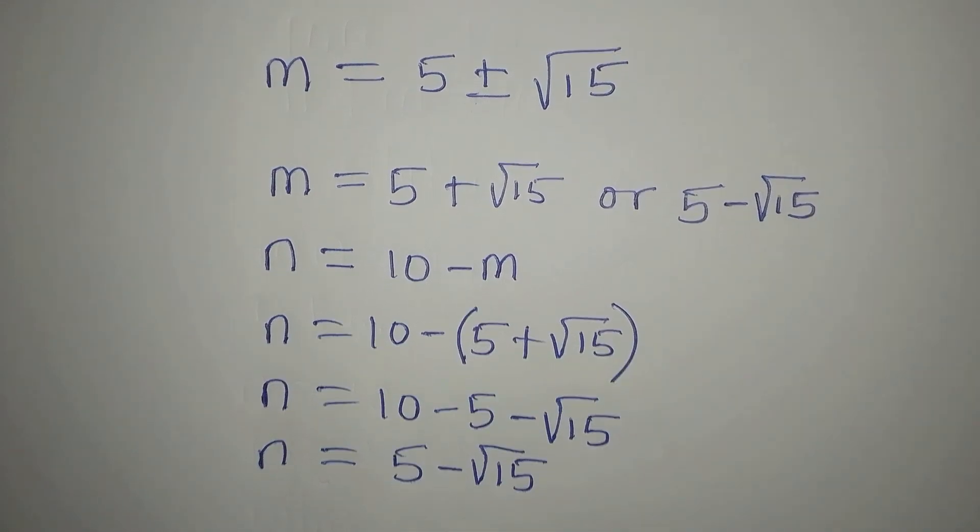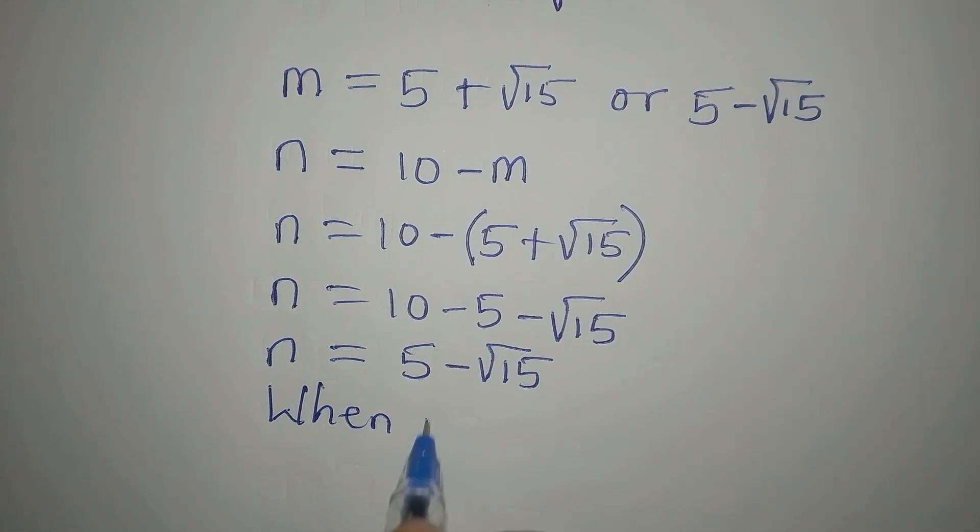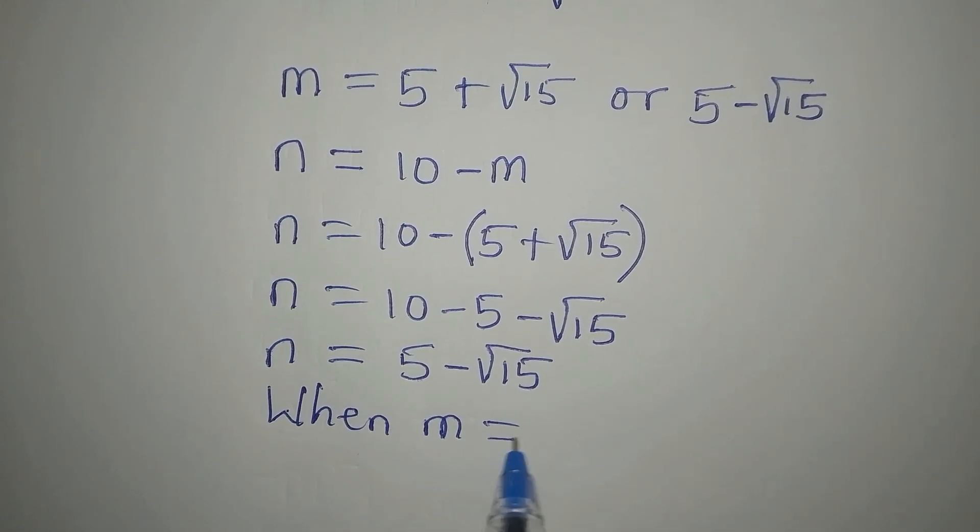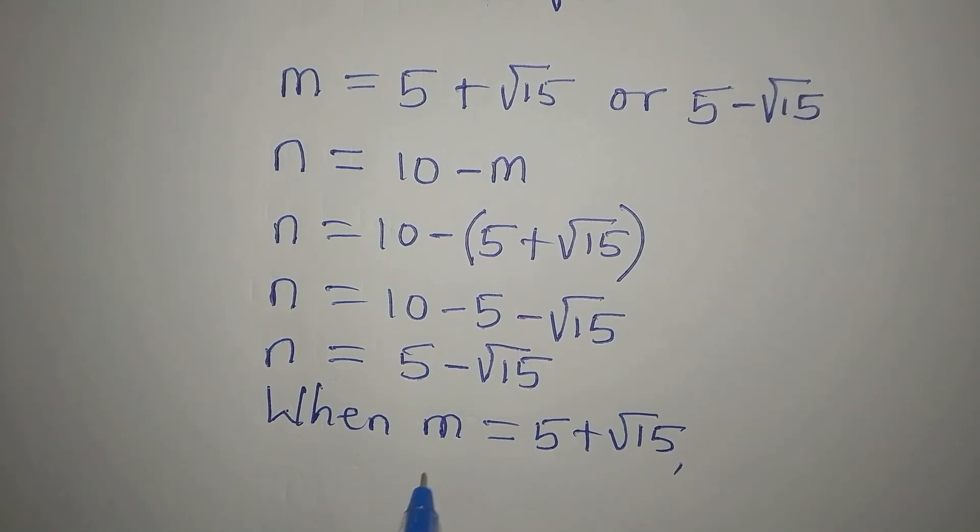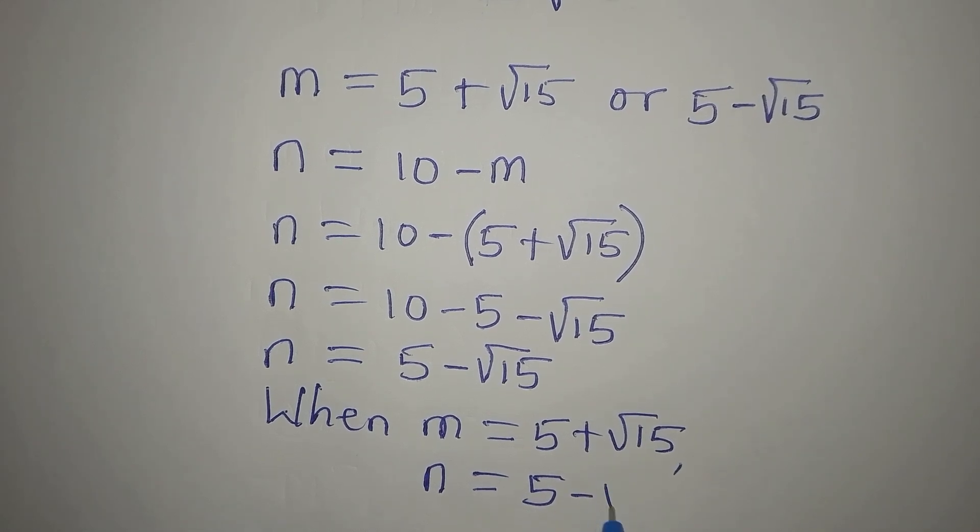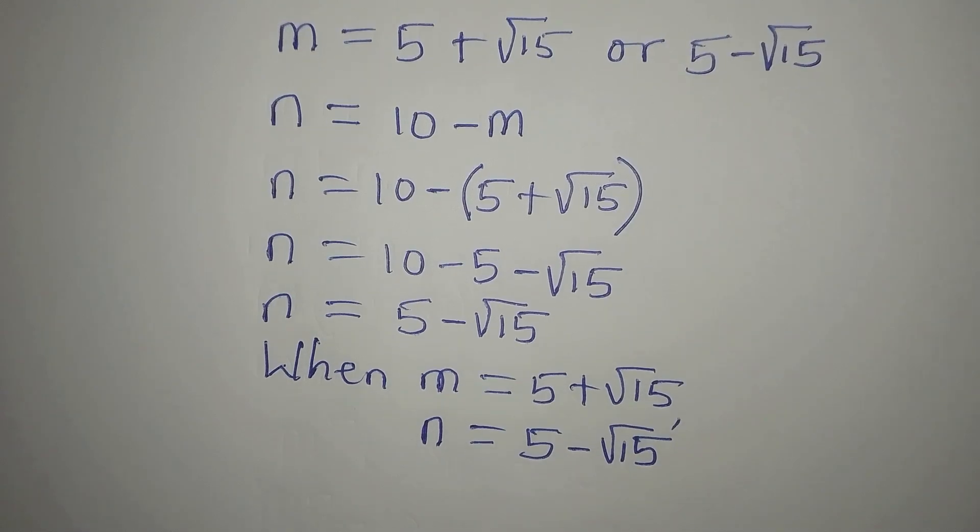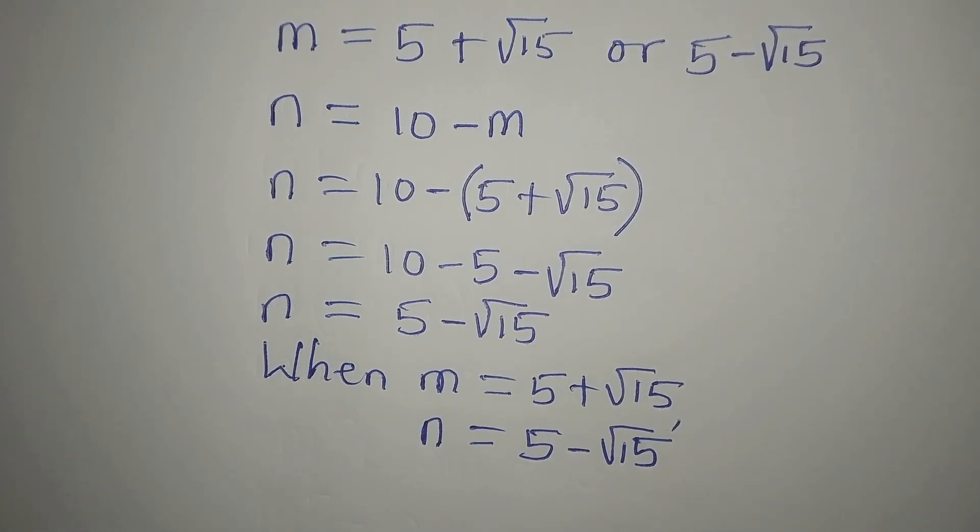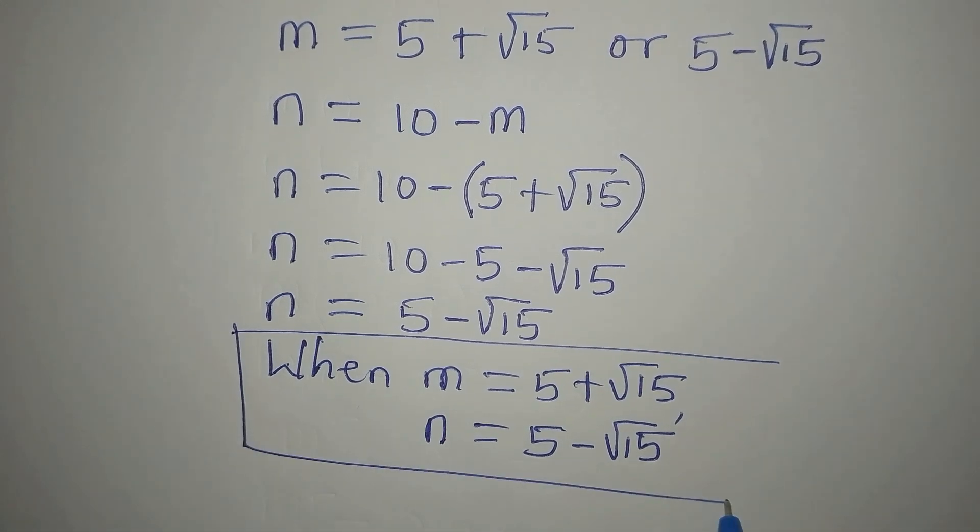So this means that when m equals 5 plus root of 15, n equals 5 minus root of 15. Here we have one of the solutions.